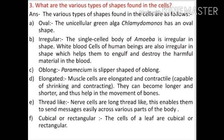Question three: what are the various types of shapes found in cells? The shapes are: (1) Oval — the unicellular green algae Chlamydomonas has an oval shape. (2) Irregular — the body of Amoeba is irregular in shape; white blood cells of humans are also irregular, which helps them engulf and destroy harmful material in the blood.